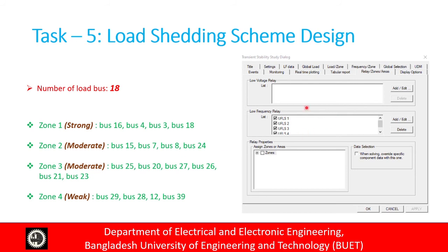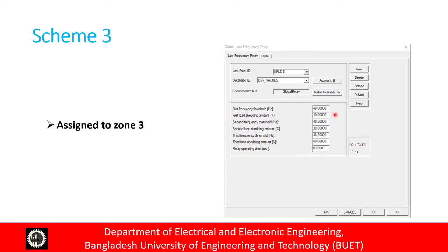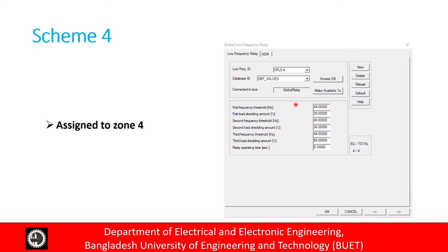We assigned four schemes for four zones. Zone 1, the strongest zone, is assigned to Scheme 1 — not much load is cut from this zone. When frequency reaches 49 Hz, only 5% of the load is shed. For the moderate zones, more load is shed than in the strong zone but less than in the weakest zone. For Scheme 4, the most load is shed — when frequency falls to 49 Hz, 30% of the total load is shed from this zone.